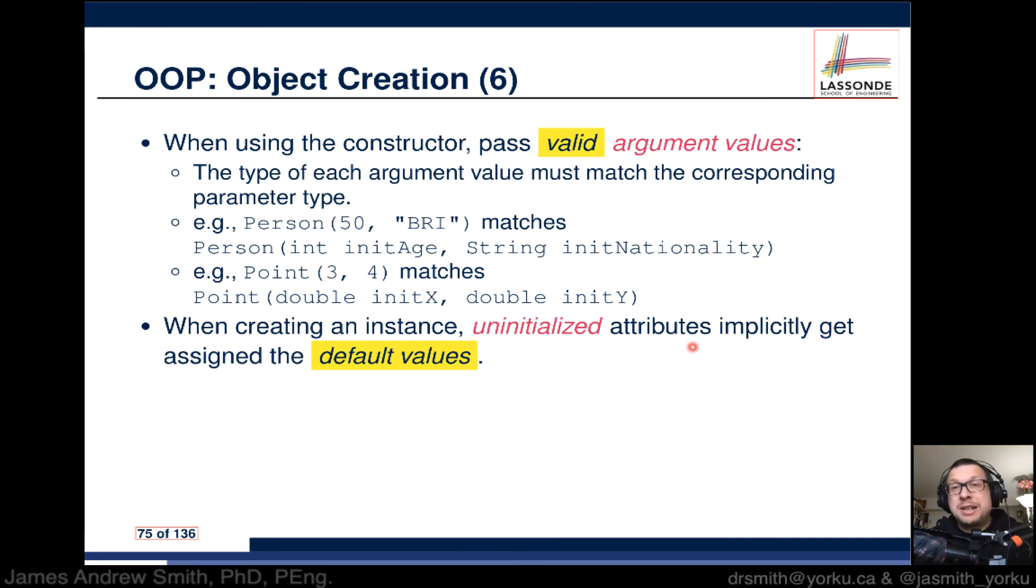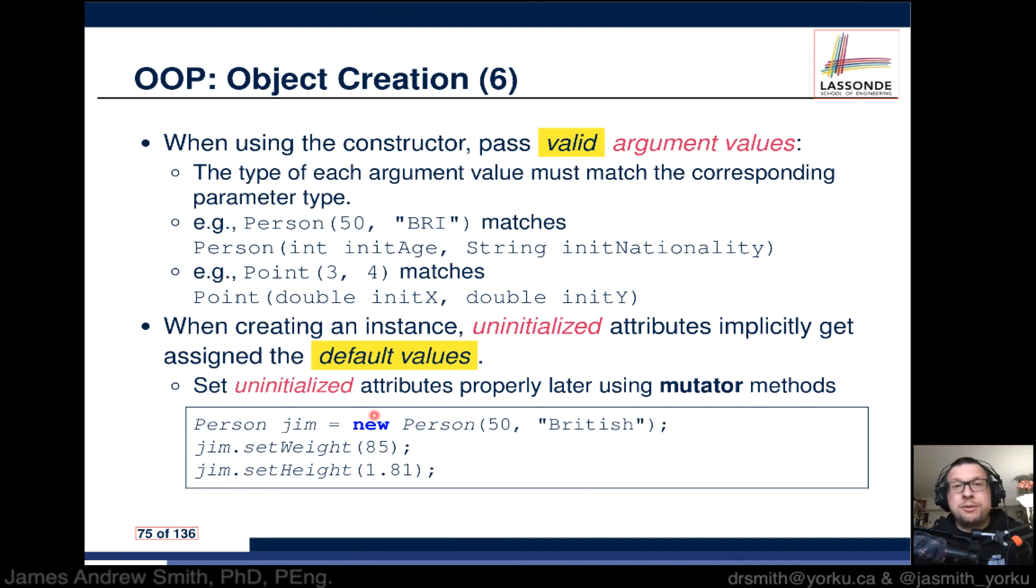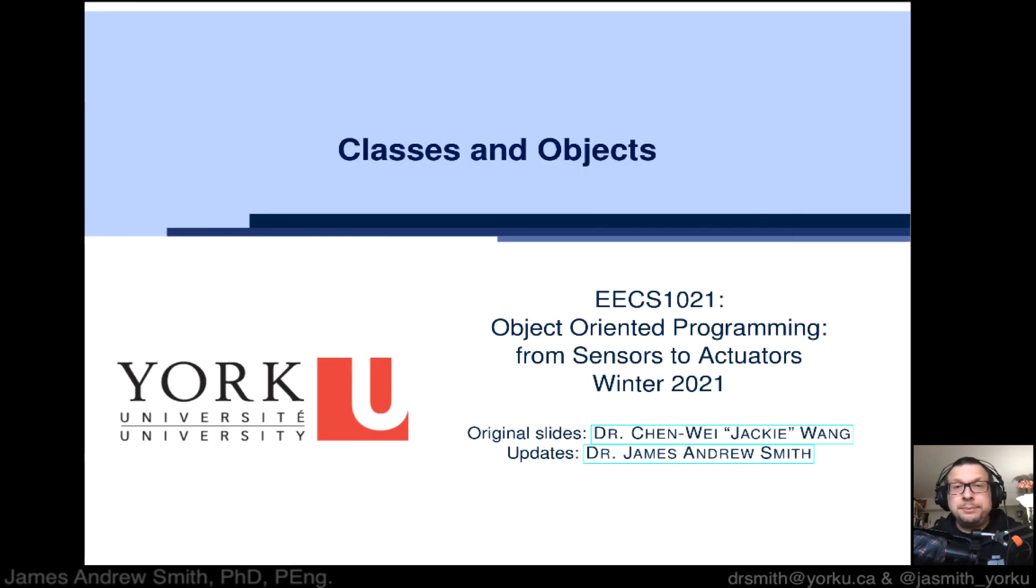When creating an instance, uninitialized attributes implicitly get assigned the default values, typically things like zero or null. So we set uninitialized attributes properly later using mutators or set-type methods. For instance, you can see here we set up Jim to have an age of 50 and a nationality of British, and then afterwards we apply two set or mutator methods. Jim, we set weight to 85, set height to 1.81. And there you have it, object construction.